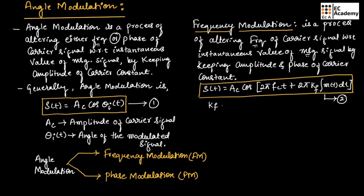Here, Kf is the frequency sensitivity parameter and m(t) is the message signal.